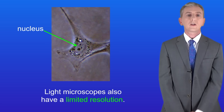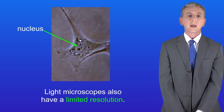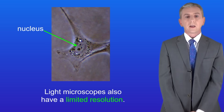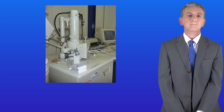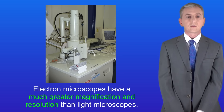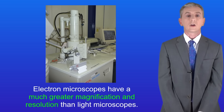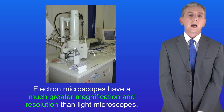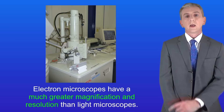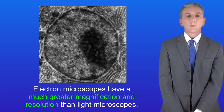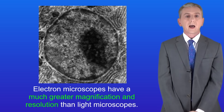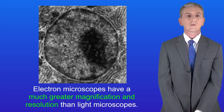Scientists realized that if they wanted to explore structures inside cells in detail then a light microscope is not that useful, so they invented the electron microscope. The key advantages of electron microscopes is that they have a much greater magnification and resolution than light microscopes — and you could be asked that in your exam. This shows an image of a nucleus taken with an electron microscope, and because of the high resolution we can now see detail in the nucleus that we could never see with a light microscope.